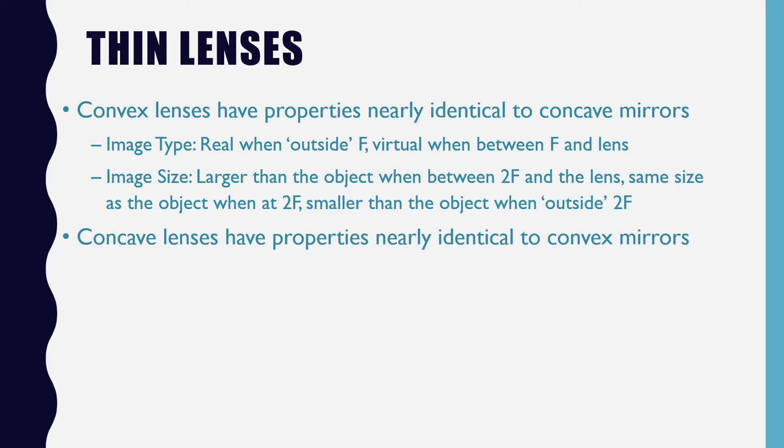Just like convex lenses have properties that are nearly identical to concave mirrors, concave lenses produce an image that is always virtual, upright, and smaller than the object.